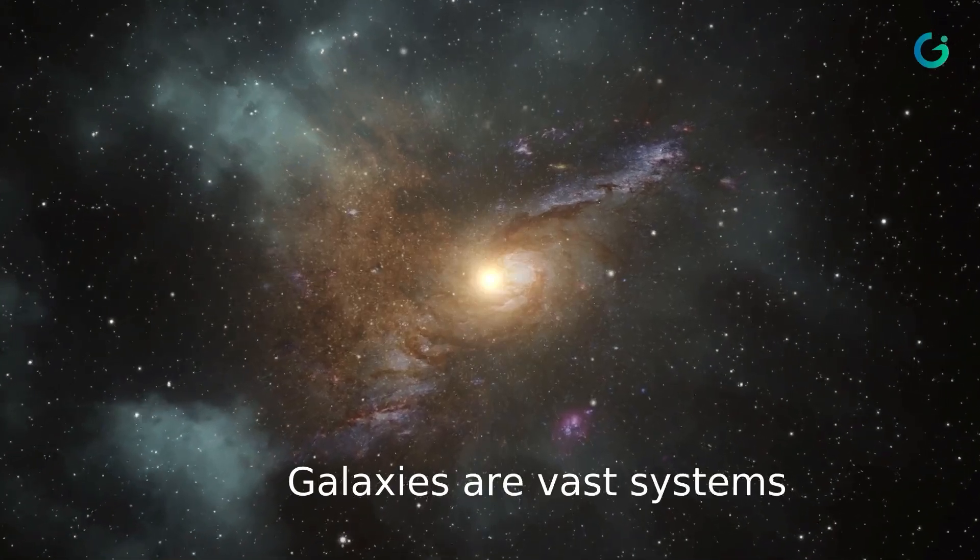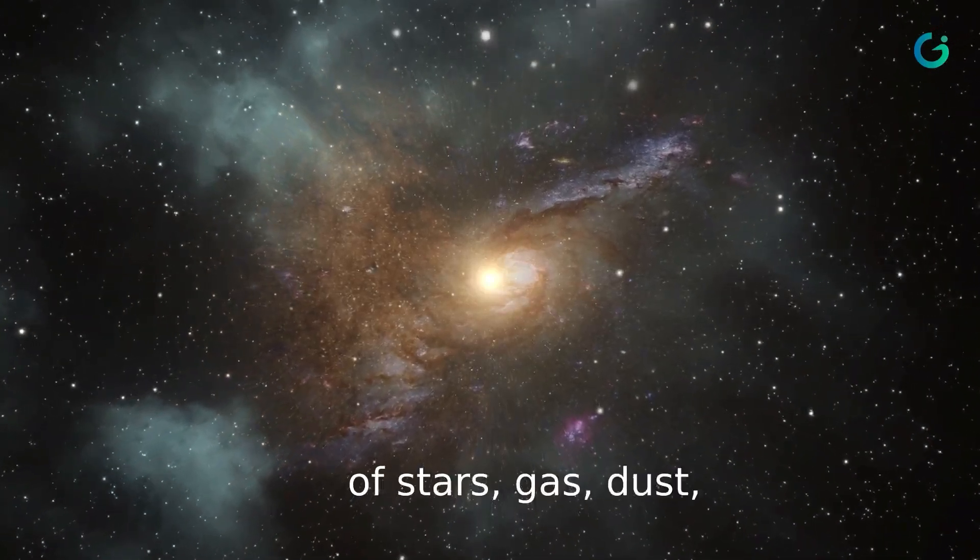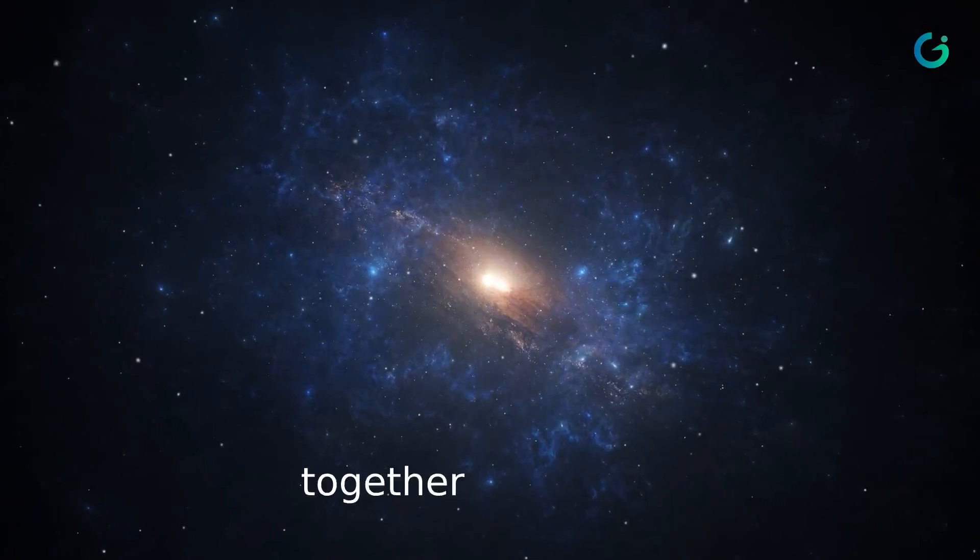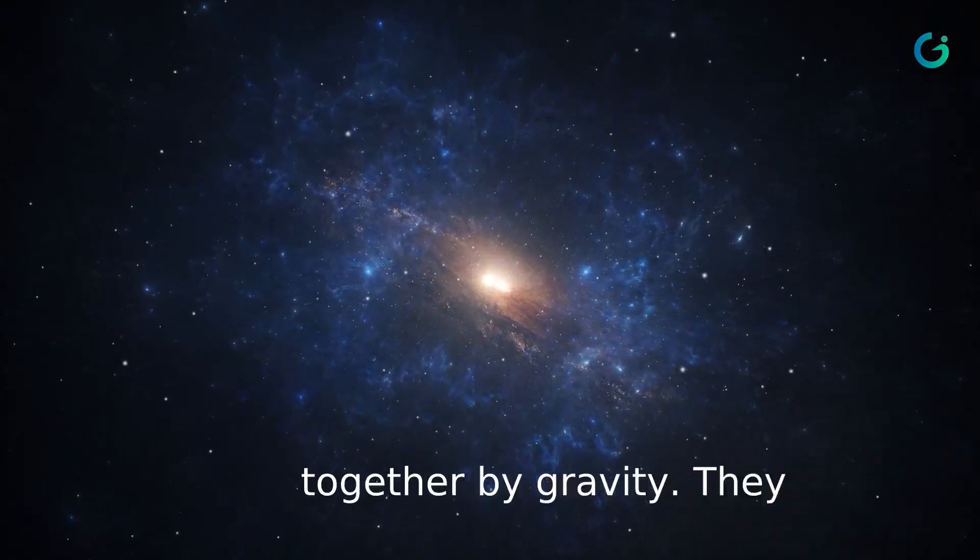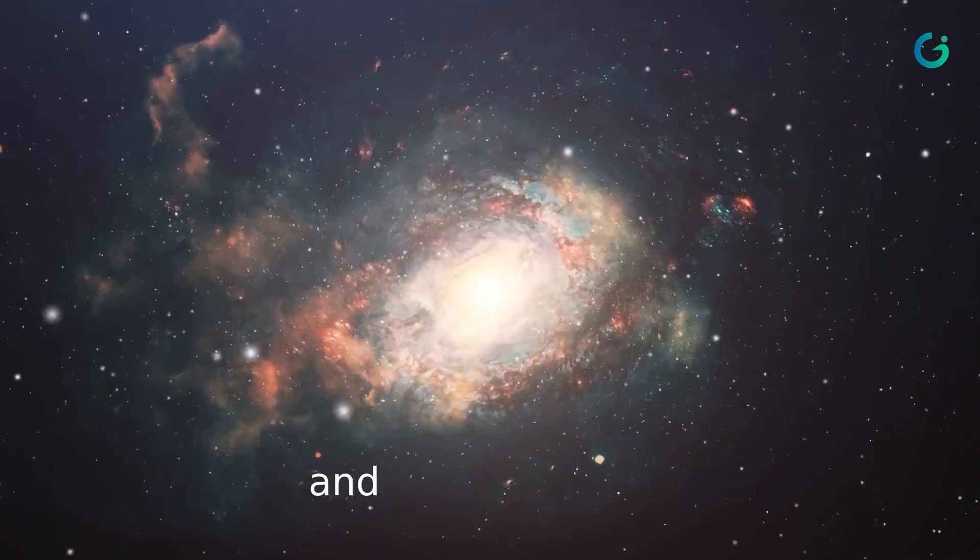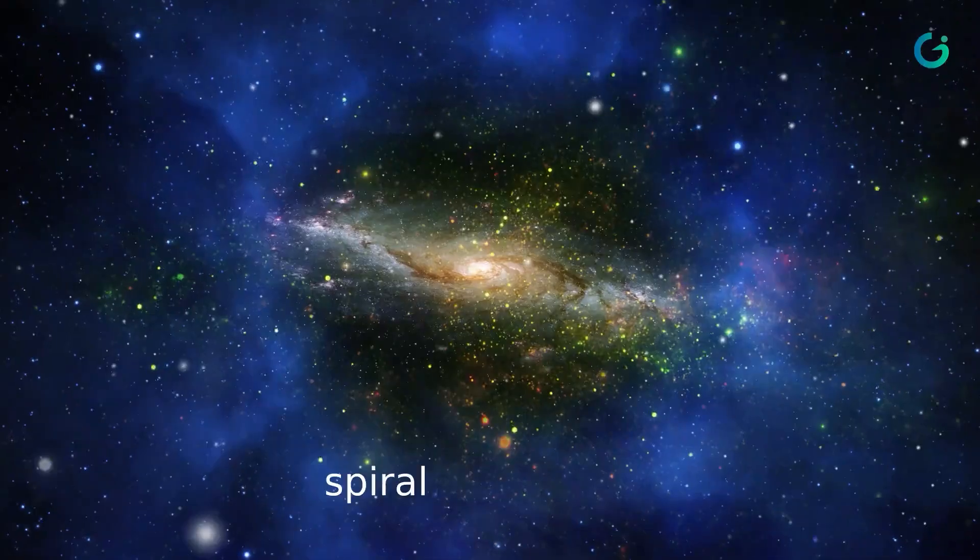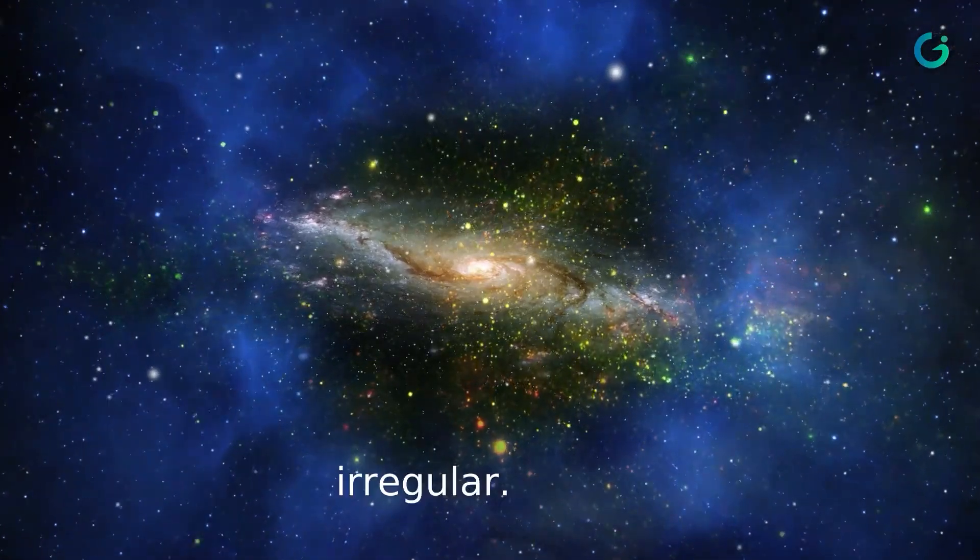Galaxies are vast systems of stars, gas, dust and dark matter bound together by gravity. They come in various shapes and sizes, ranging from spiral and elliptical to irregular.